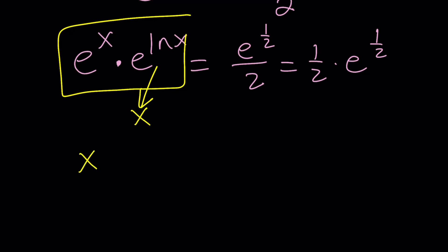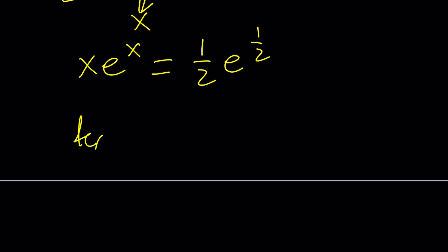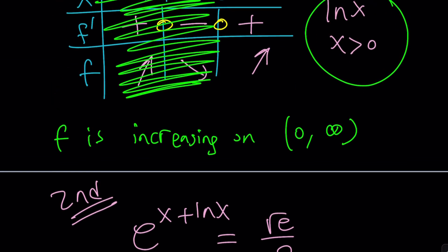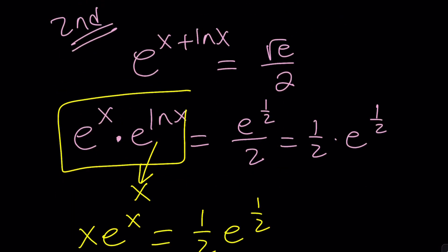So x e to the x equals one half e to the power one half. If you look at the function f of x equals x e to the x you're going to realize that the first value we found with the first method, negative one, did not work because that's not in the domain. But this time things are different.